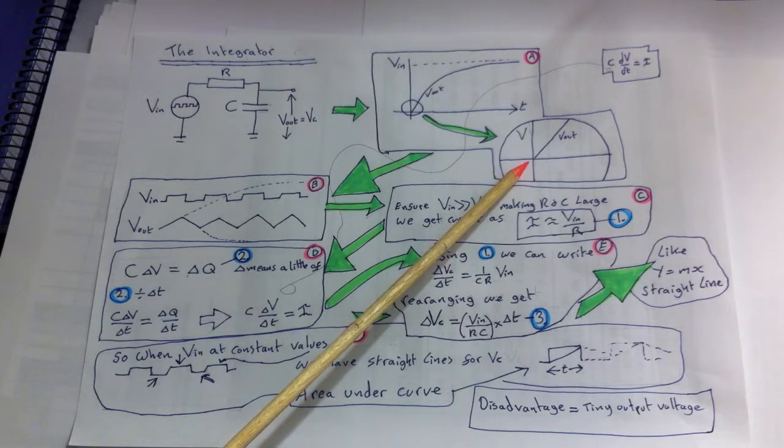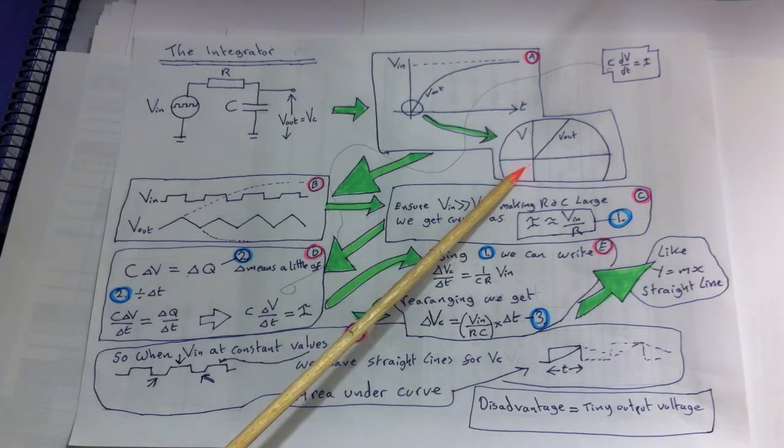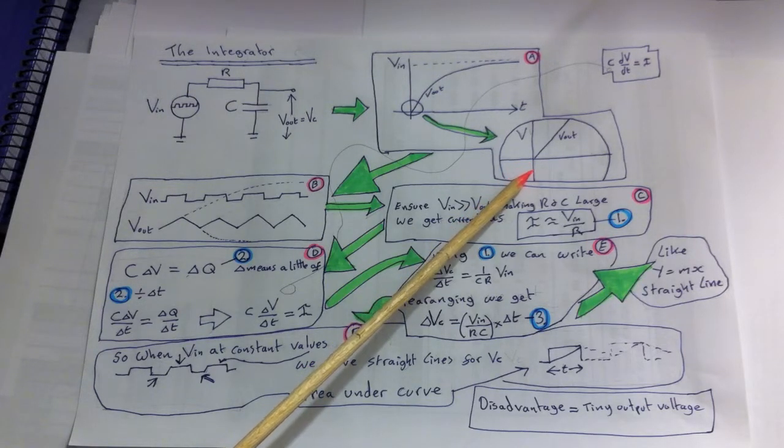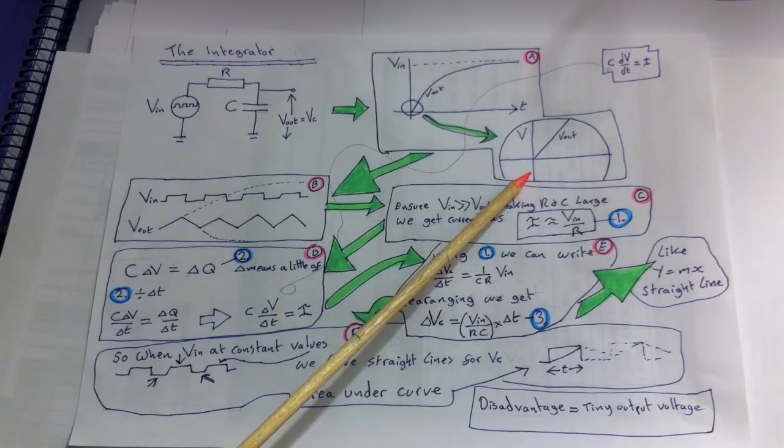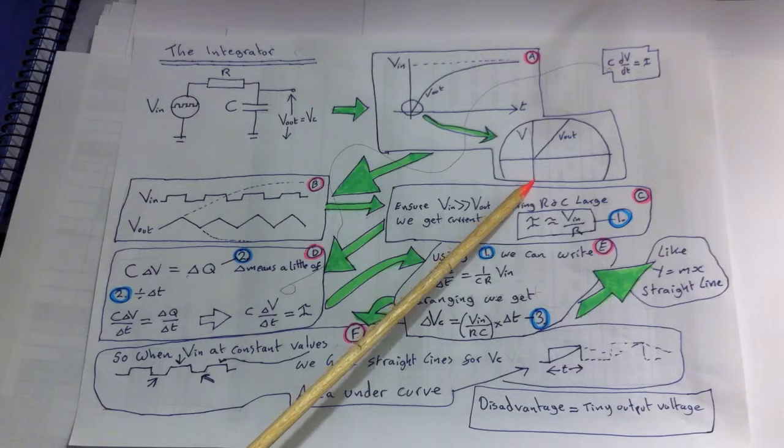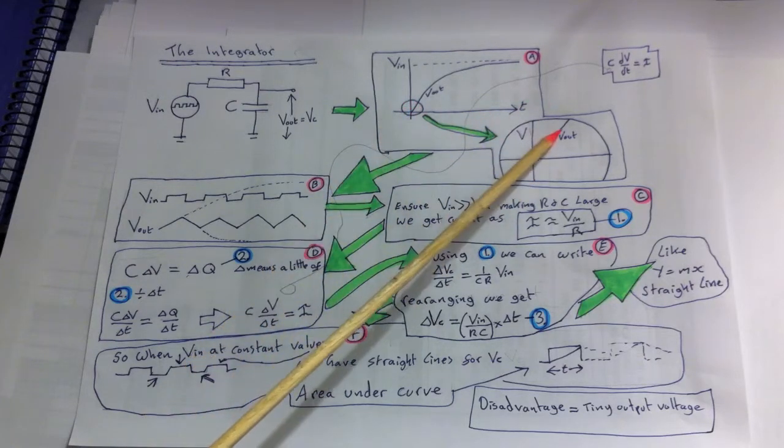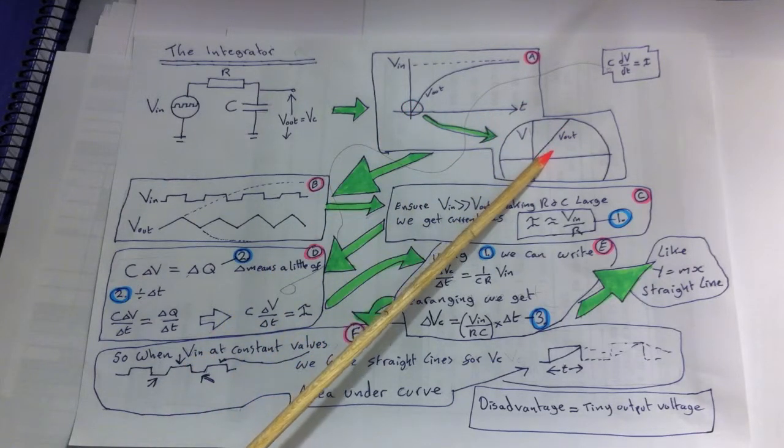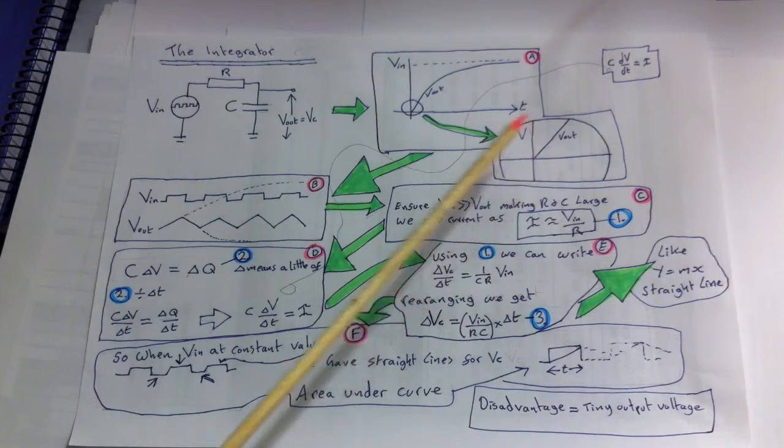...that we specify with our choice of R and C. Then we can time things so when Vin changes direction the capacitor is only charged up to the perimeter of our circle section here. This would then result in an output that looks like this.